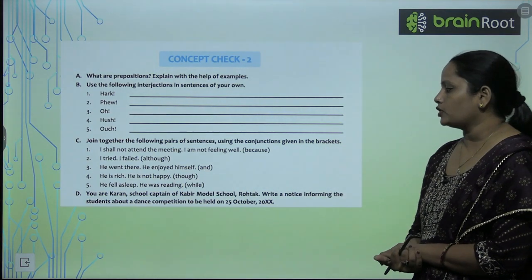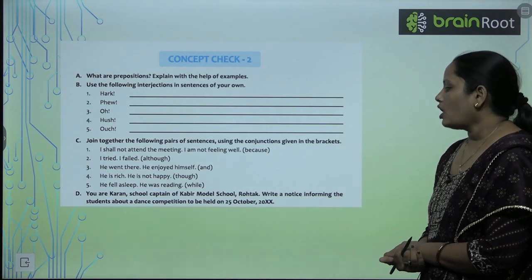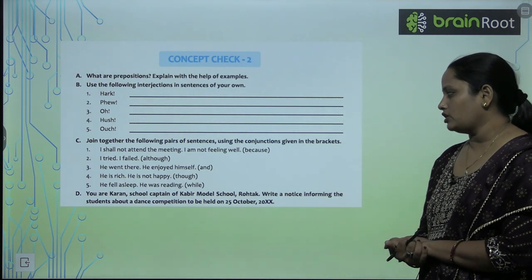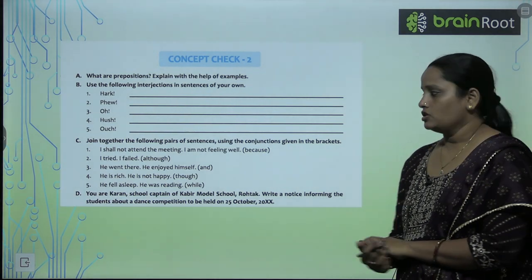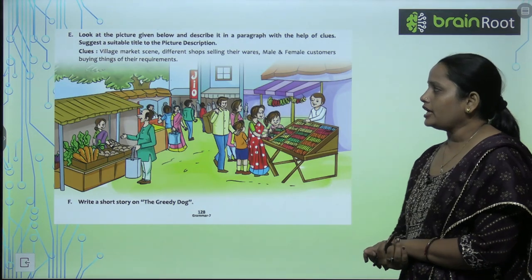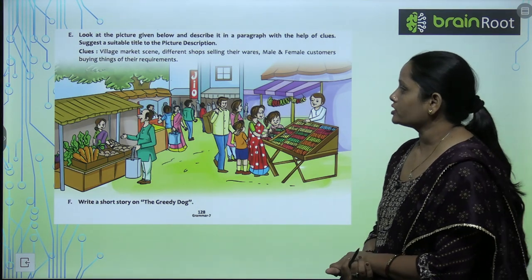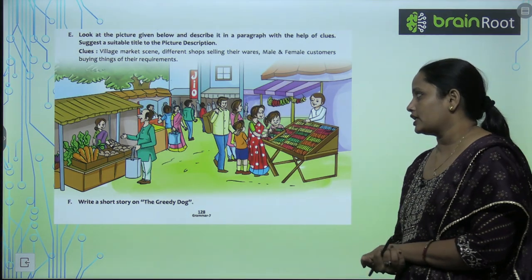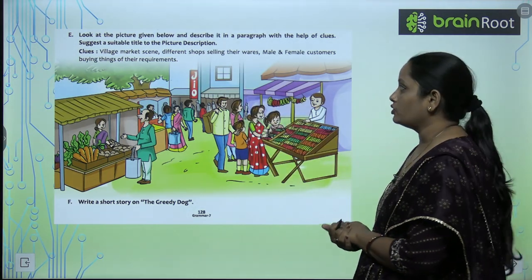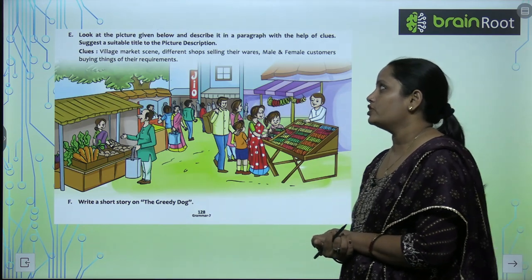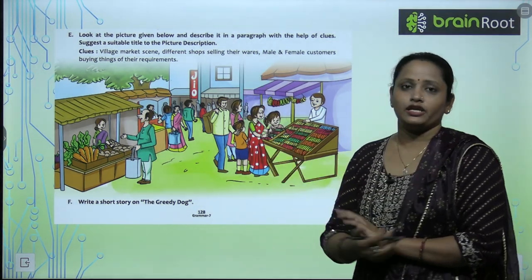Next: you are the current school captain of Kabir Modern Public School. Write a notice informing students about a dance competition to be held on 25th October. After that, look at the picture given and describe it in a paragraph. With the help of clues, suggest a suitable title. The clues mention a village market scene with different shops displaying their wares and male and female customers buying things. Use the given hints and write down the paragraph.